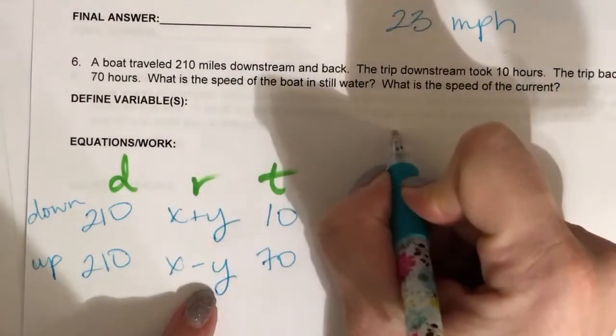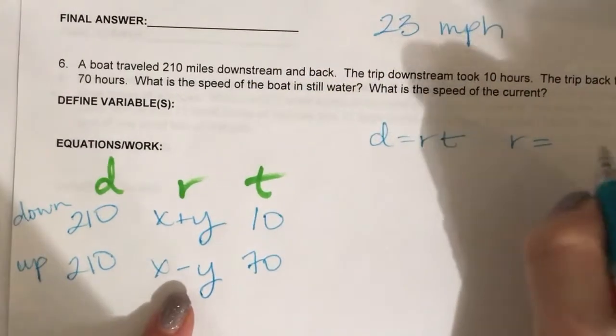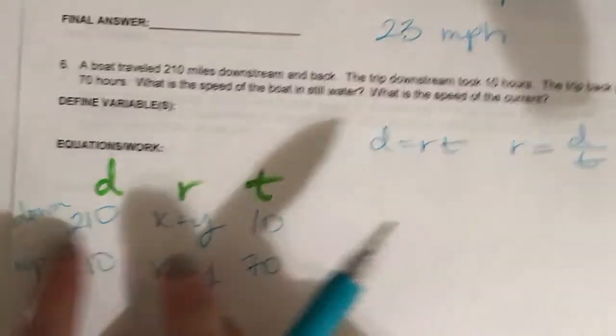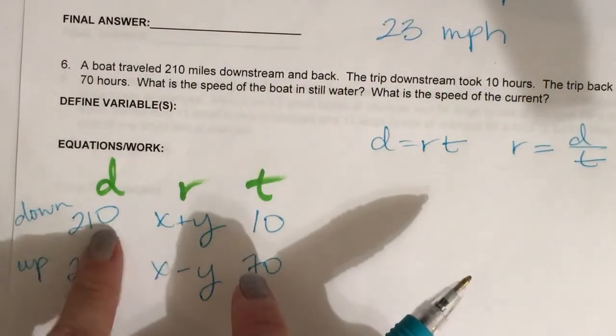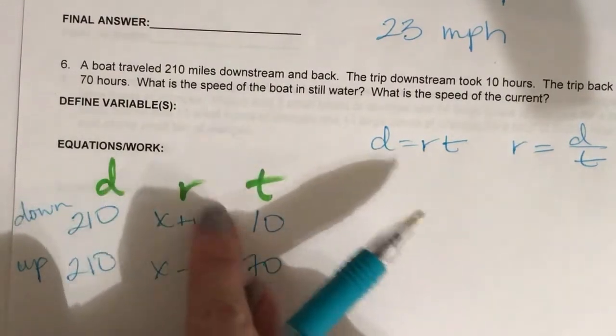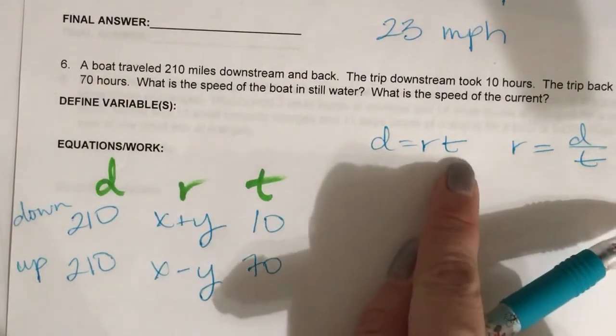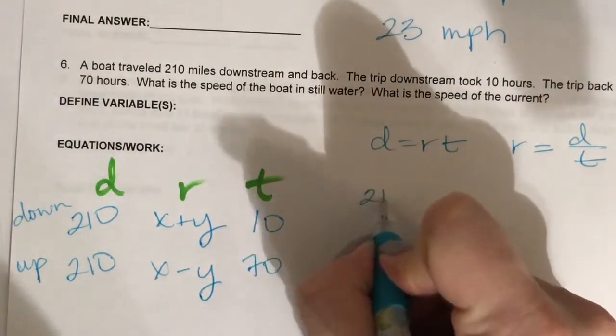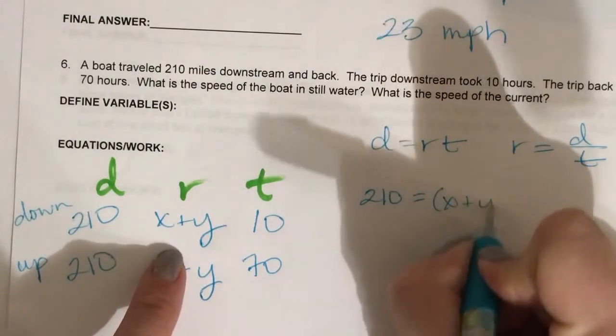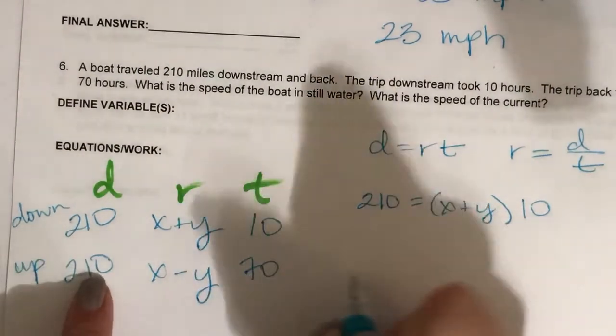Remember that distance equals rate times time, which means that rate equals distance divided by time. So downstream it's 210 divided by 10, so you know that this must be 21 miles per hour. Or you can set it up into the equation and algebraically solve. Distance equals rate times time for that one.